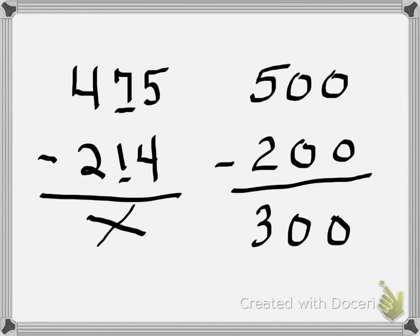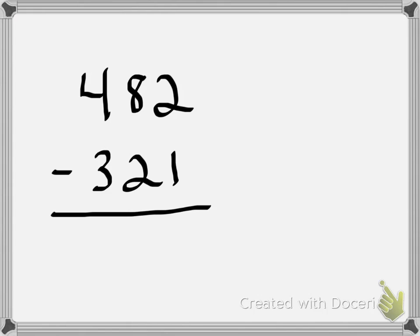Now let's see if you can do one. On your paper, copy down this problem: 482 minus 321. Now stop the video and go ahead and round each of those numbers to the nearest 100 and then solve it.